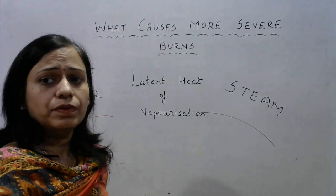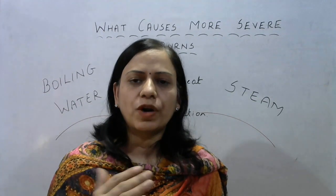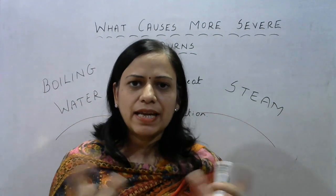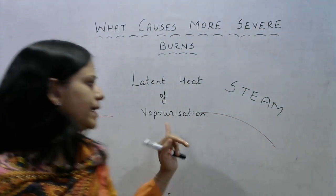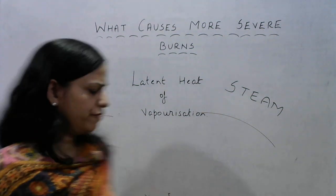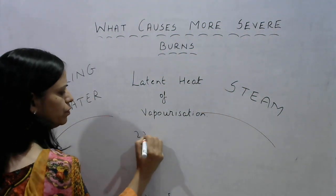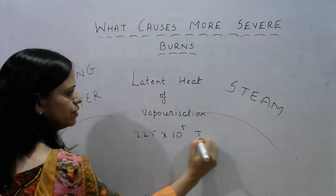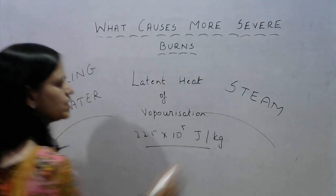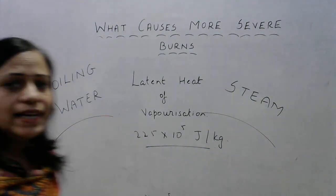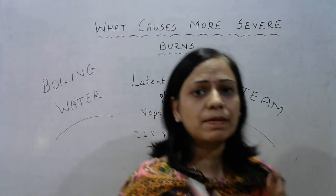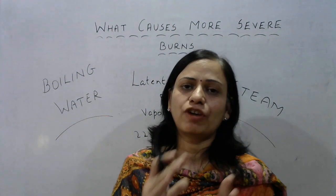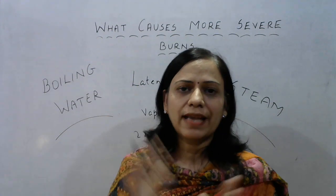When water gets converted to steam, it has to absorb the latent heat of vaporization, the exact value of which is 2.25 × 10⁵ joules per kilogram. This is the value of latent heat of vaporization absorbed by water at its boiling point in order to get converted from the liquid state to the gaseous state.